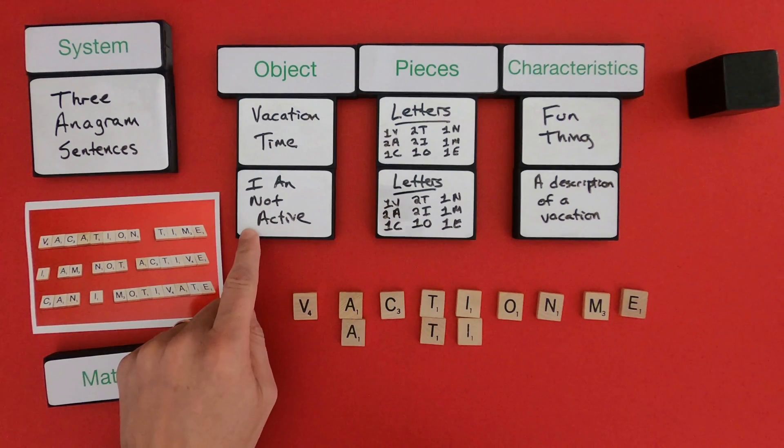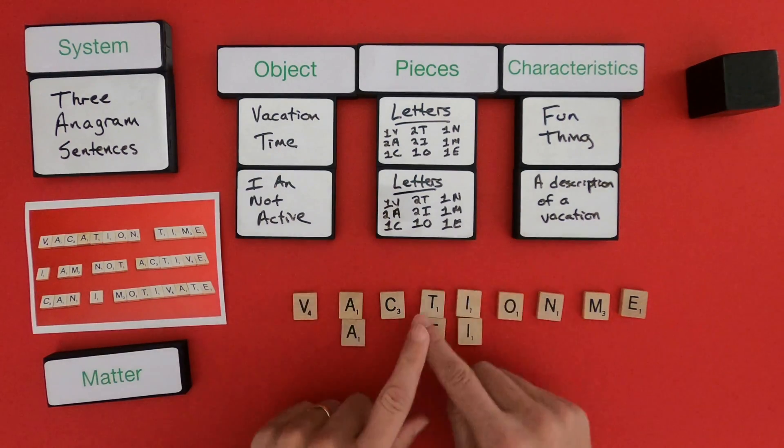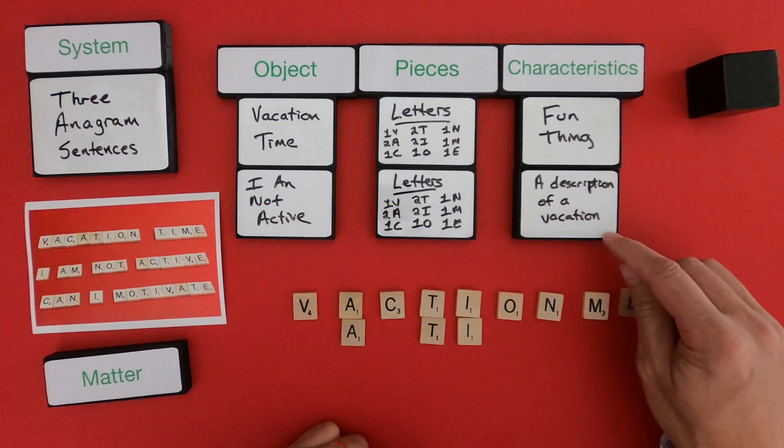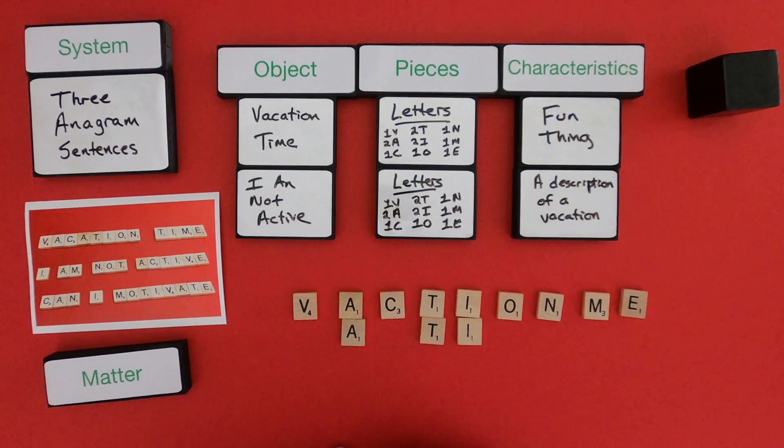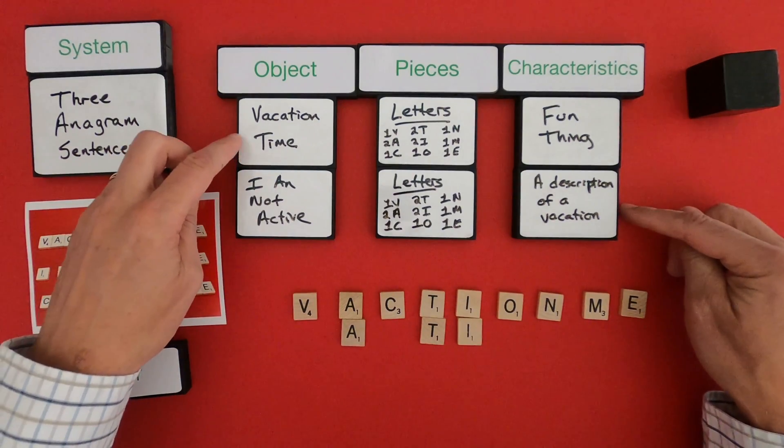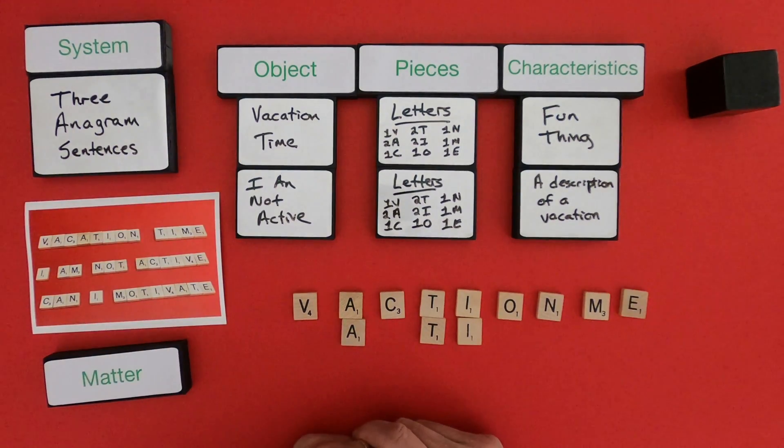Okay, so for the second one, I'm not active. I'd have the same exact letters. Since it's an anagram, it's going to be the same letters. But now, since I put them in a different order, the characteristics are different. It's now a description of vacation time, where you're not really very active. You're not doing anything. Now let me do the final one.